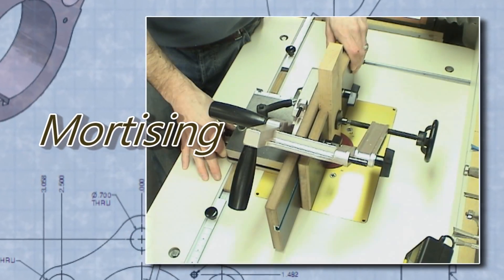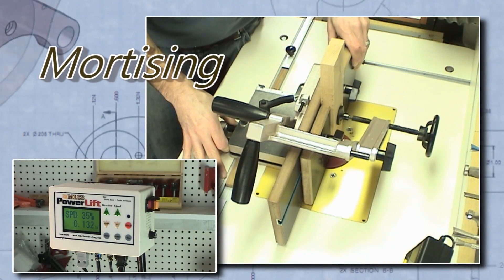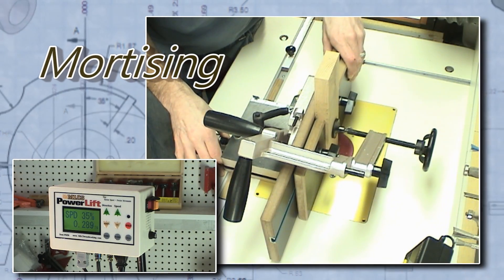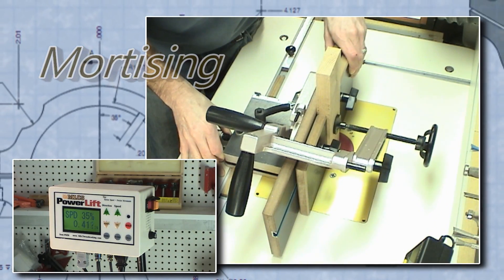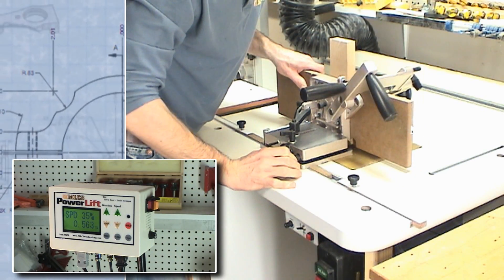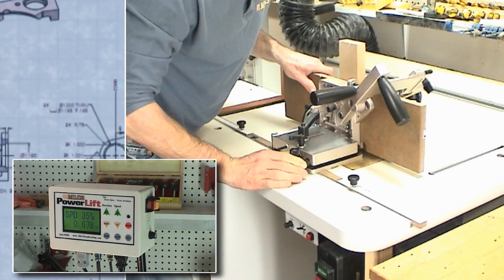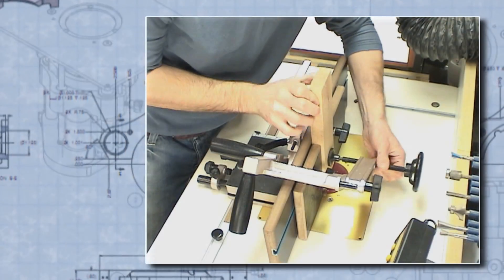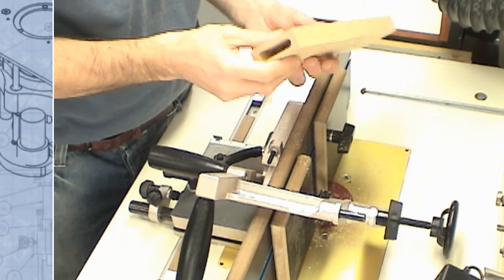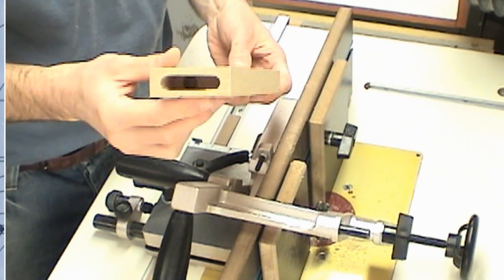The foot pedal is what makes the PowerLift really unique. You can bring the spinning bit up into the work while keeping both hands on the workpiece. This is very suitable for mortising. Here's a jig that controls the movement of the wood back and forth on the top of the router table. While the foot pedal brings the router bit up into the work to create the perfect mortise for loose tenon joinery.